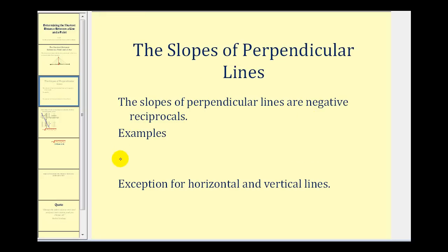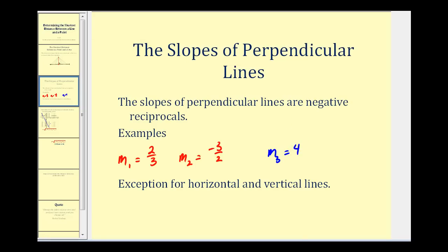For example, if we have a line with slope two-thirds, and a second line is perpendicular to it, then the slope of the second line would have to be negative three-halves — we flip it and change the sign. If another line had a slope of four, it's helpful to write it as a fraction: four over one. If a line is perpendicular to that, its slope would have to be negative one-fourth.